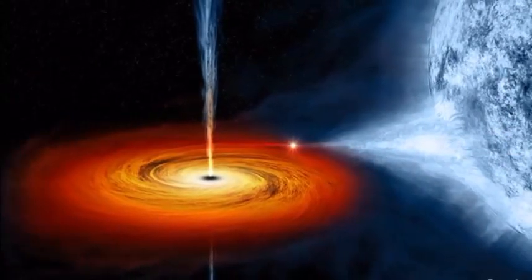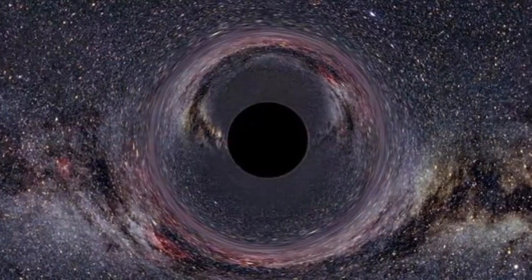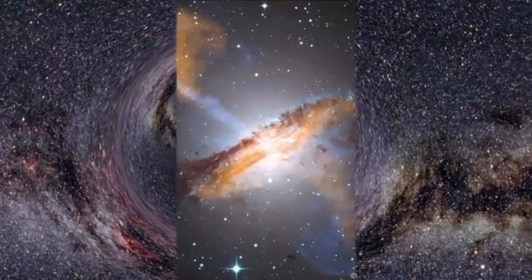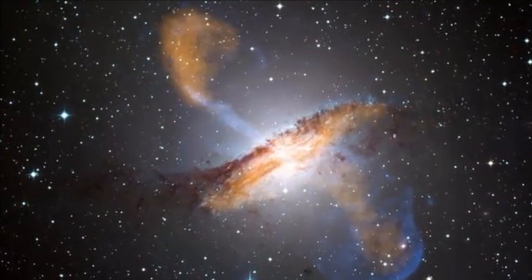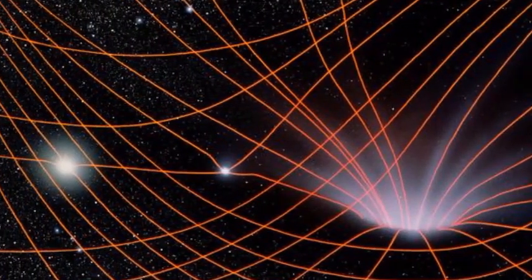The gravitational field becomes so strong that not even light can escape, rendering the region where the star used to be profoundly dark—a black hole. The outermost boundary of the hole is its event horizon.